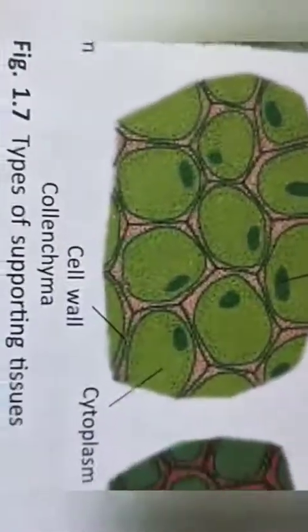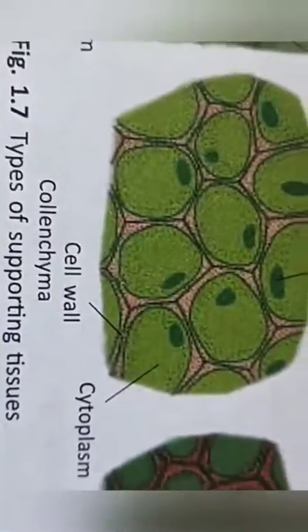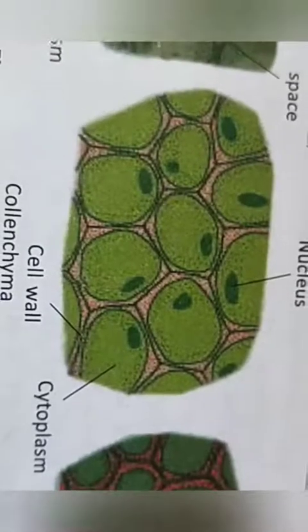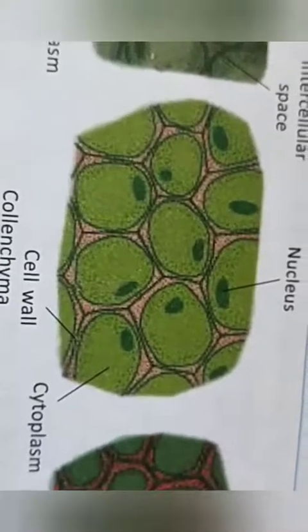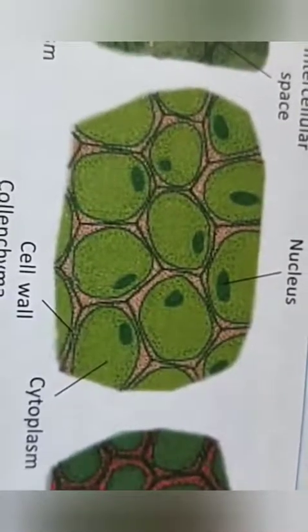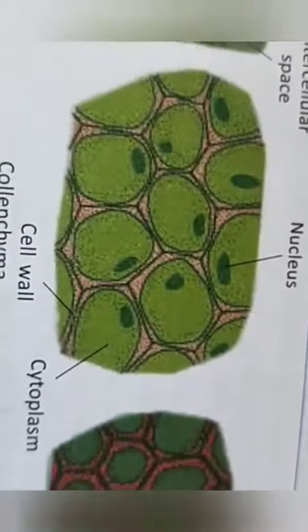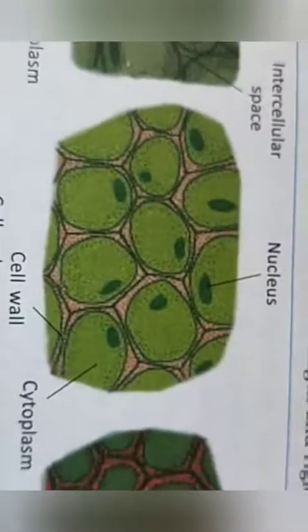Now let's see colenchyma. It is formed of parenchymatous but elongated cells. There is a difference in structure — their walls are thick at the corners, and there are no intercellular spaces in between.